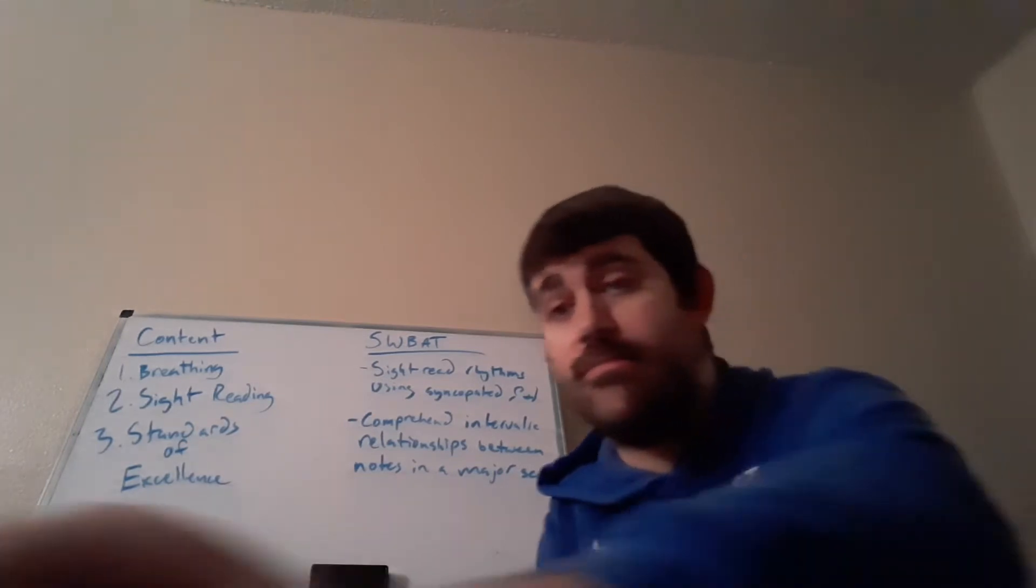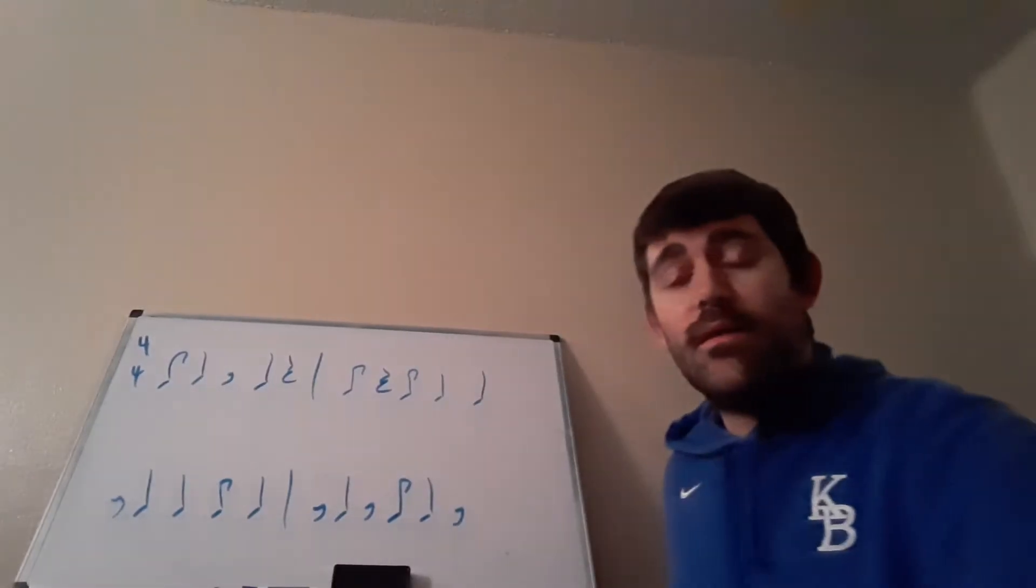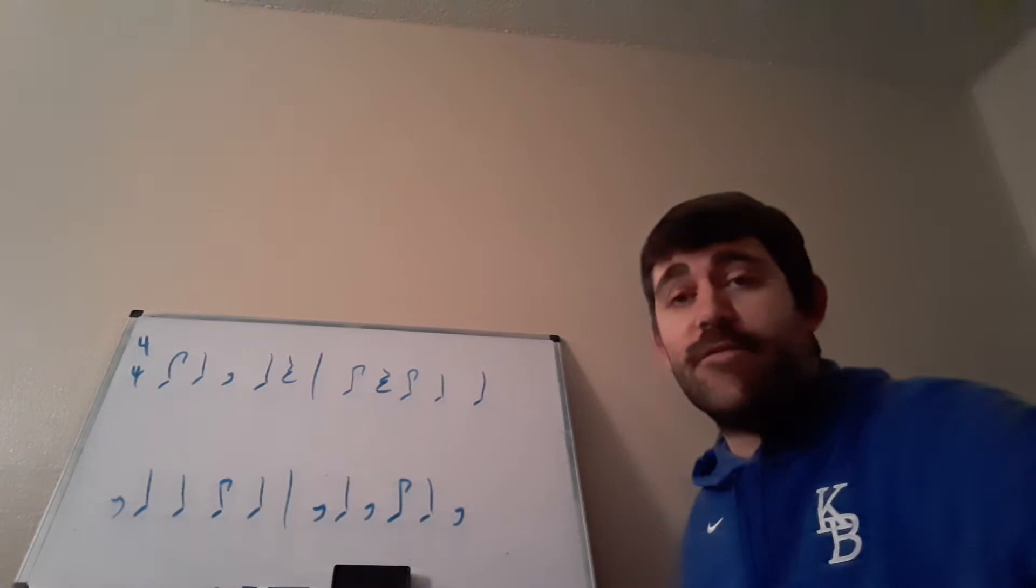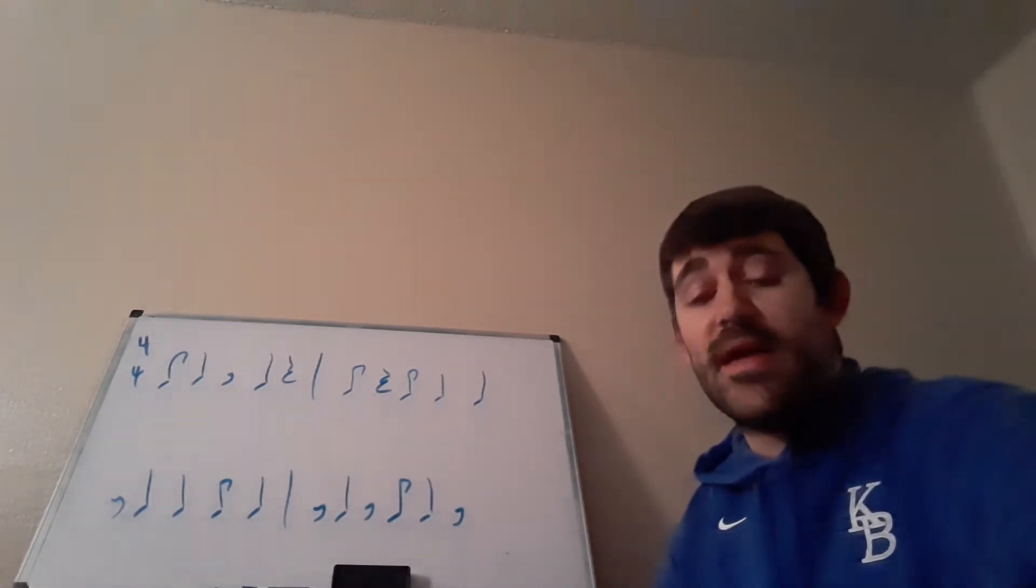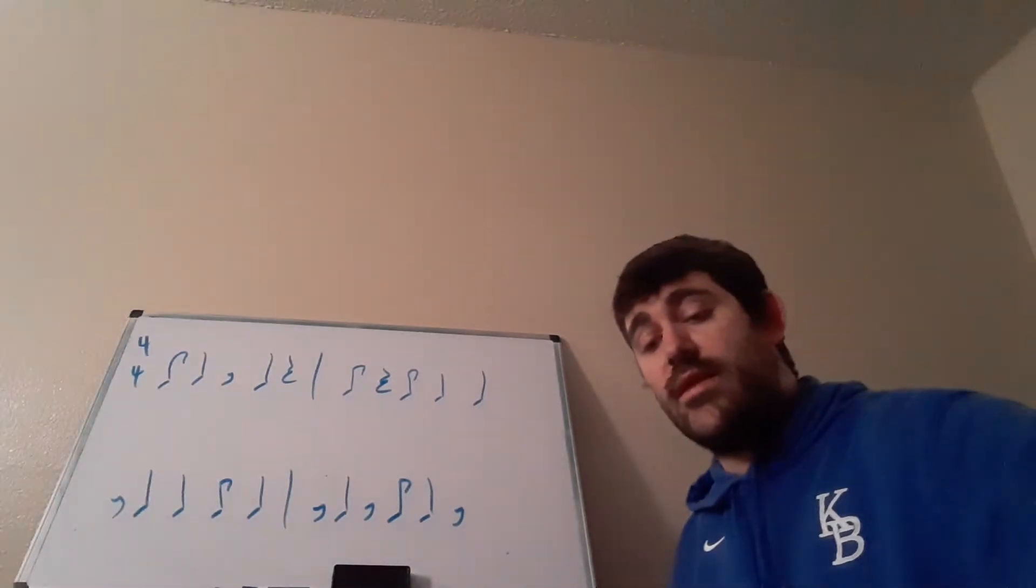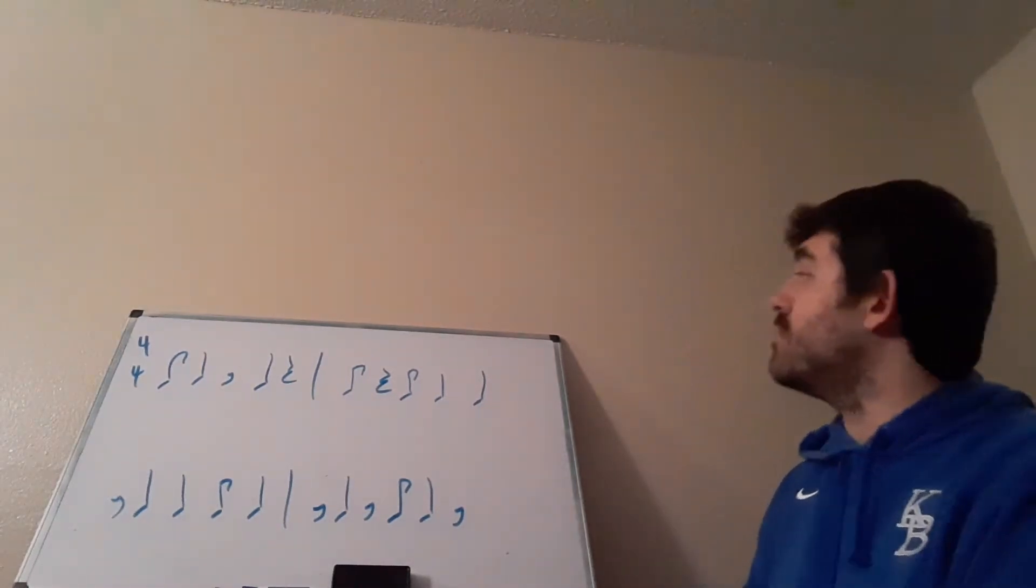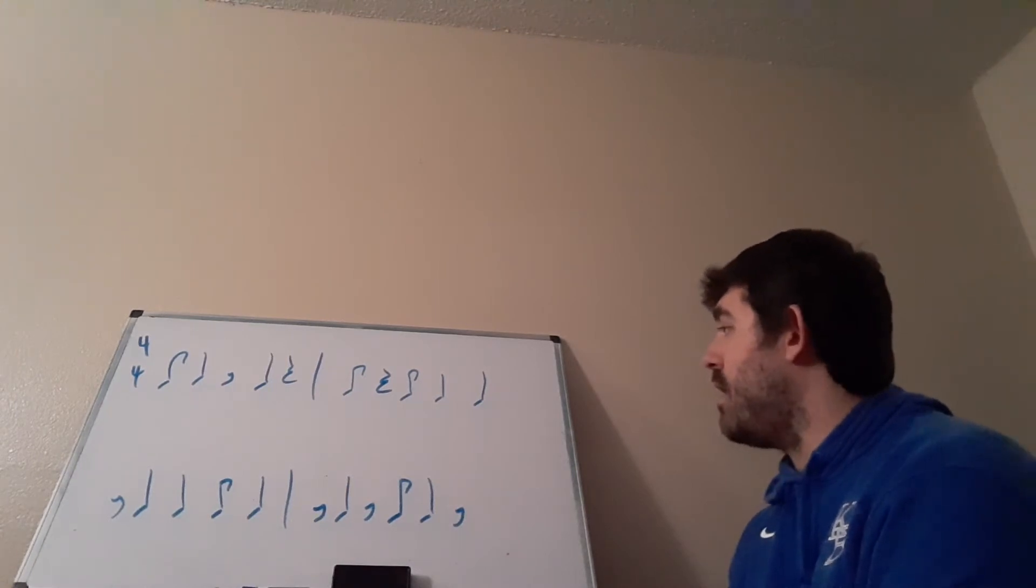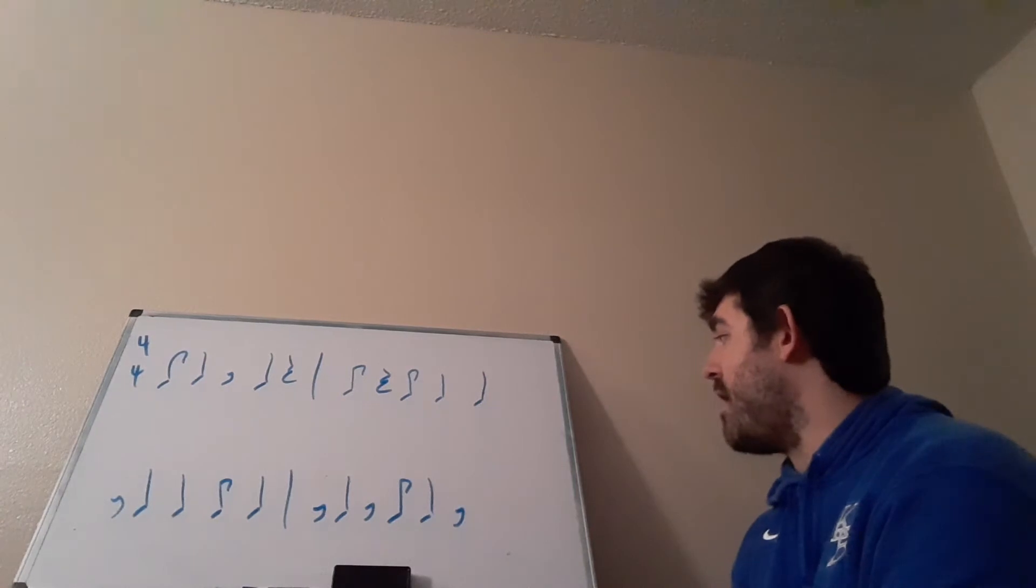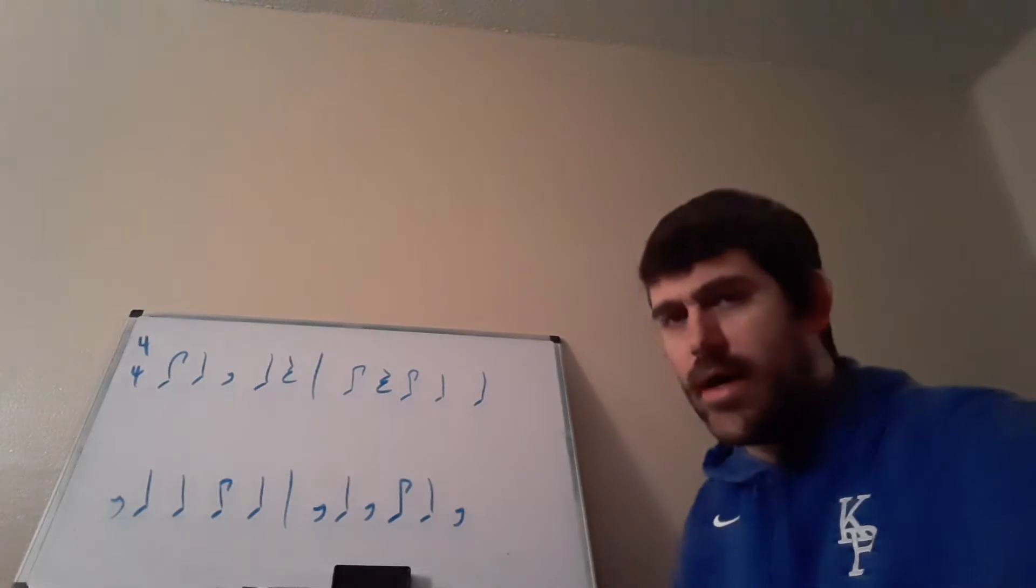All right, let's take a look at the sight reading. Here's the rhythm of the day. First, we'll count it cold. Next, we'll figure out how to count it. Then we'll count it one more time. And then finally, we'll get to play it on our band instruments. So, with a click, here we go. Ready and count. One, and three. One, and three, four. And, and, and four. And, three, and. And, tricky. I know.